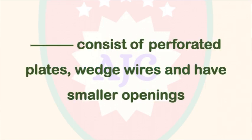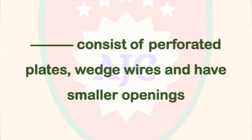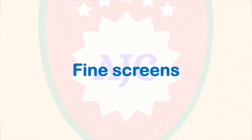Fine screens consist of perforated plates and wedge wires and have smaller openings compared to coarse screens. Fine screens are identified by their perforated plates, wedge wires, and smaller opening sizes.